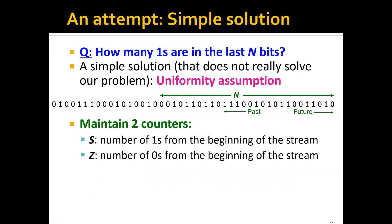We will maintain two counters: S, the number of 1s from the beginning of the stream, and Z, the number of 0s from the beginning of the stream. Then the answer to this question, how many 1s are there in the last N bits, would just be N times S over S plus Z.